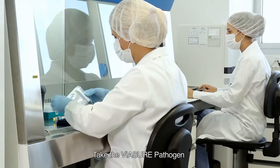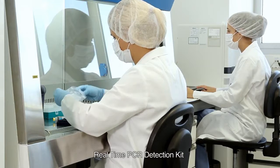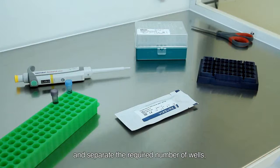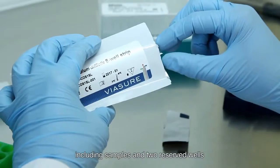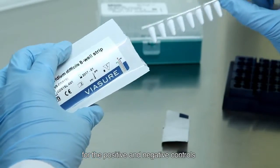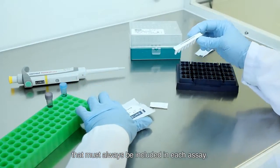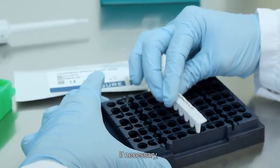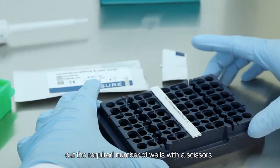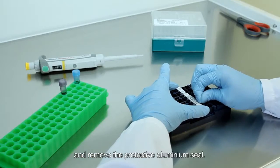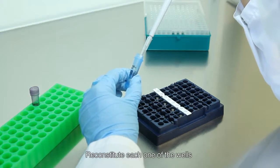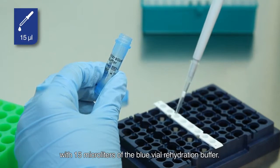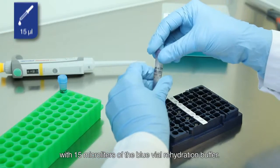Take the Viassure Pathogen Real-Time PCR Detection Kit and separate the required number of wells including samples and two reserved wells for the positive and negative controls that must always be included in each assay. If necessary, cut the required number of wells with scissors and remove the protective aluminum seal. Reconstitute each one of the wells with 15 µl of the blue vial rehydration buffer.